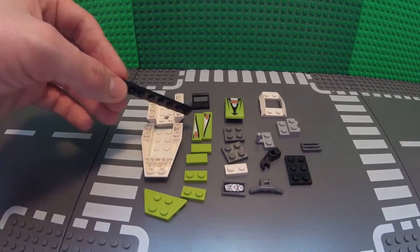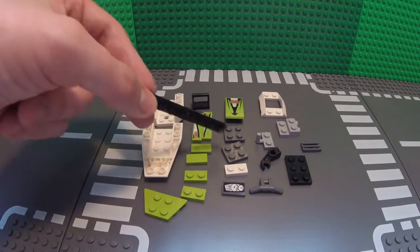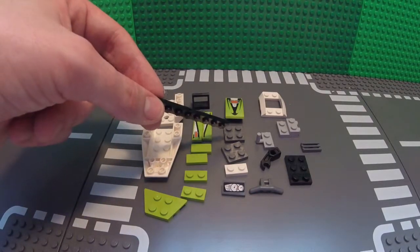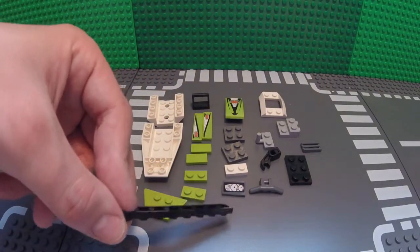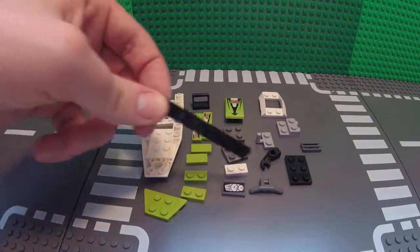two 1x4 tiles, a backrest type piece, a 2x4 sloped piece, two 2x2 plates, a 1x2 sloped piece, handlebars,